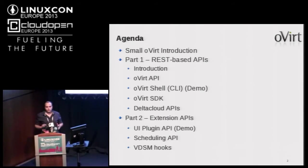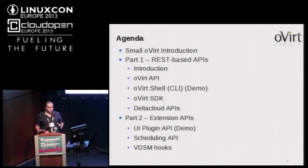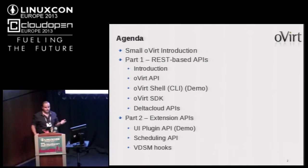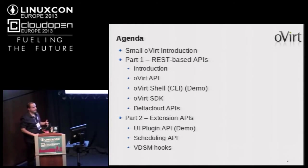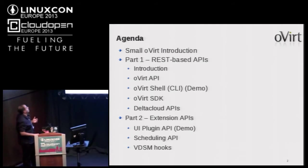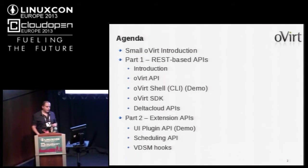The agenda will be as follows. I'll divide this session into two parts. The first part will cover the REST-based APIs in the oVirt engine — the regular API, the shell command, the oVirt shell which is the CLI, and the SDK. Then I'll briefly talk about Delta Cloud APIs. The second part will cover extending oVirt engine functionality using UI plugins, scheduling plugins, and VDSM hooks.